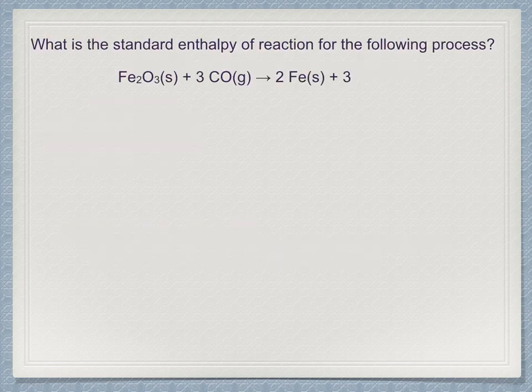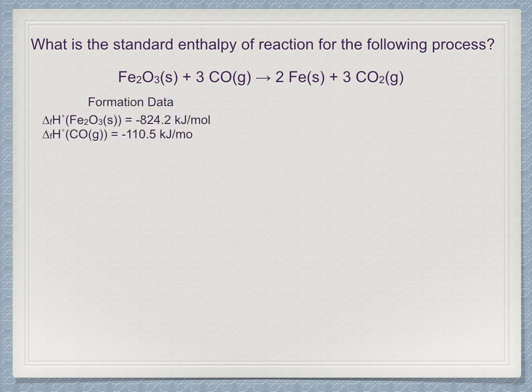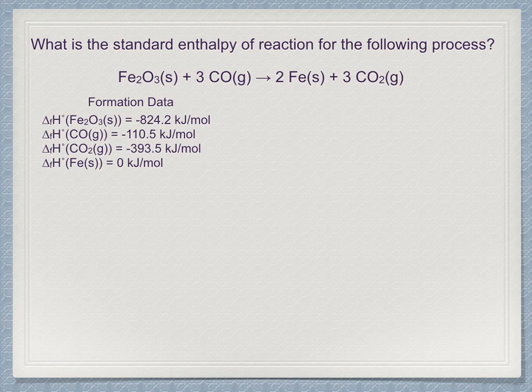What is the standard enthalpy of reaction for this process? Iron oxide reacts with 3 carbon monoxide to form elemental iron and 3 carbon dioxide molecules. First thing is to look up the formation data. We find the following values: minus 824.2 for iron oxide, minus 110.5 for carbon monoxide, minus 393.5 for carbon dioxide, and of course, 0 for elemental iron.